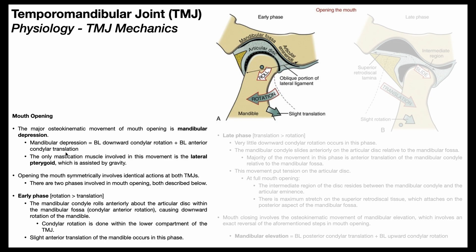Just to clue you in: the downward condylar rotation is occurring in the early phase, and the anterior condylar translation is occurring in the late phase. So rotation happens in the early phase, and translation happens in the late phase. It's also worth mentioning that the only mastication muscle involved in mandibular depression is the lateral pterygoid muscle, and this is also assisted by gravity. So gravity and the lateral pterygoids facilitate mandibular depression.